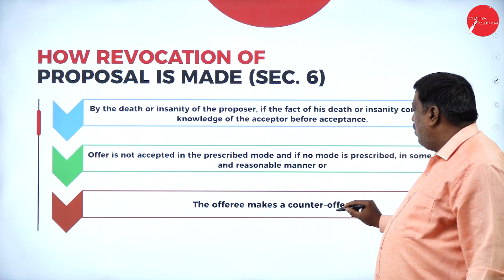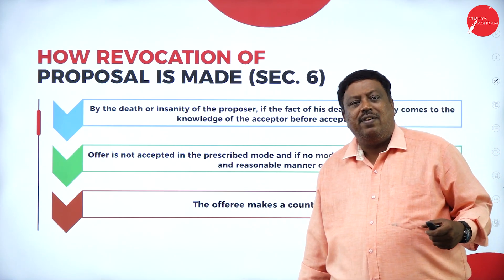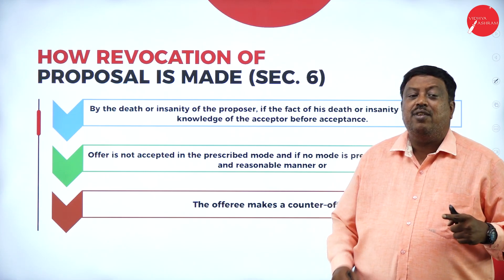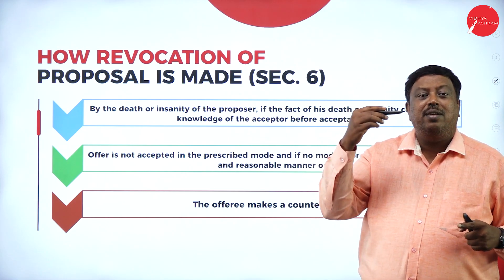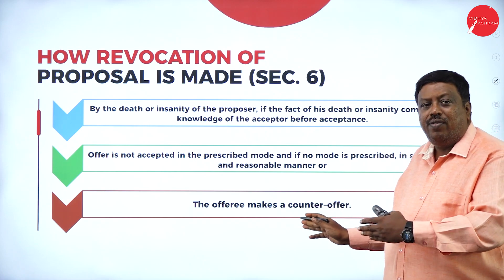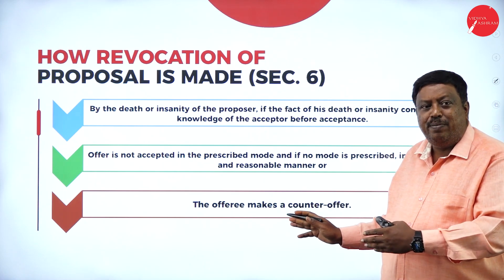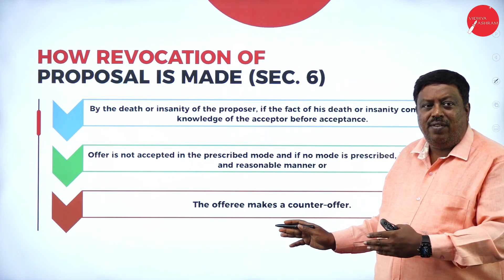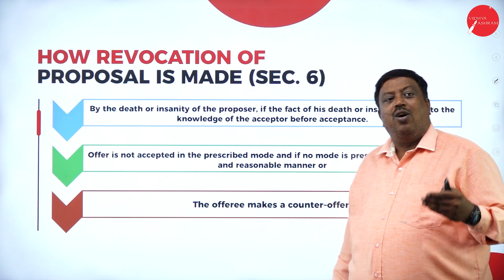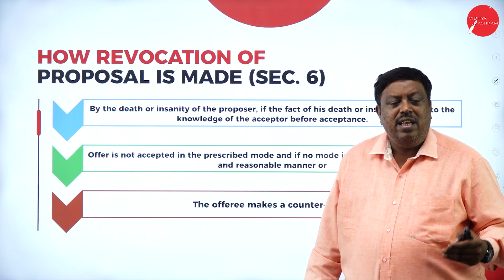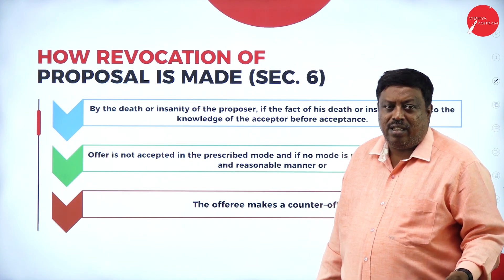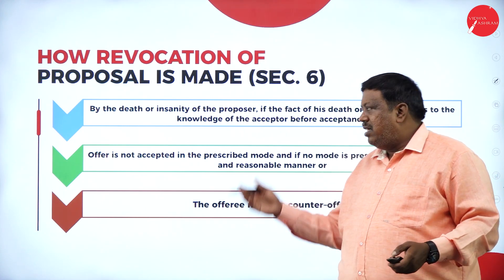Sixth way of revocation: the offeree makes a counteroffer. When the price of the offer is 100 and you say you want it at 90, the offer is called a counteroffer. If the offeror says goods will be delivered within 10 days and the offeree says it must be delivered within 5 days, that is a counteroffer. In such cases, the proposal is revoked.